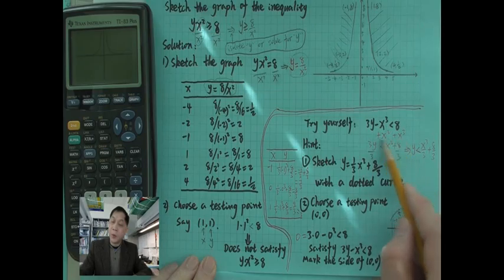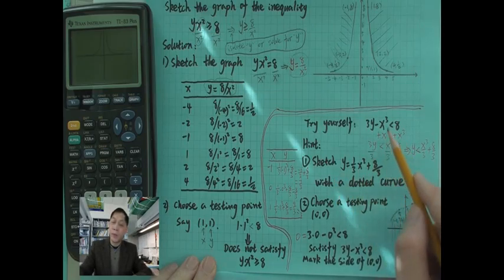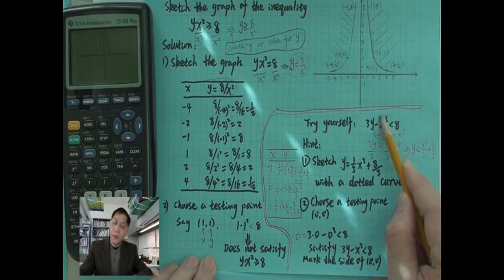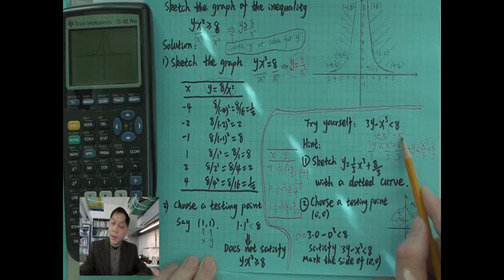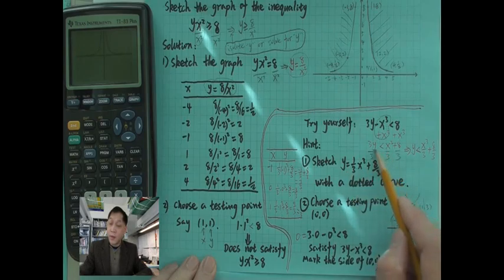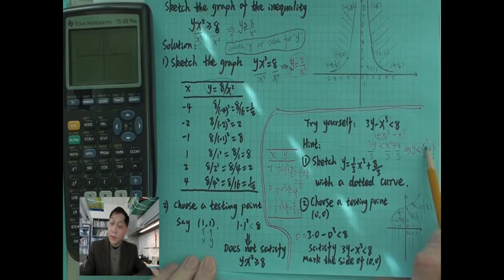Plus x cubed on both sides, you may cancel positive and negative. Then 3y less than right hand side is x cubed plus 8, divided by 3 on both sides. So y is less than x cubed over 3 plus 8 over 3.